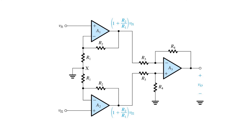Instrumentation amplifiers are often called upon to amplify weak voltage signals from sources with relatively high source resistance. So we'd like the instrumentation amplifier to have a very high input resistance, similar to that of the non-inverting configuration. We can do that simply by introducing non-inverting buffers ahead of our difference amplifier.